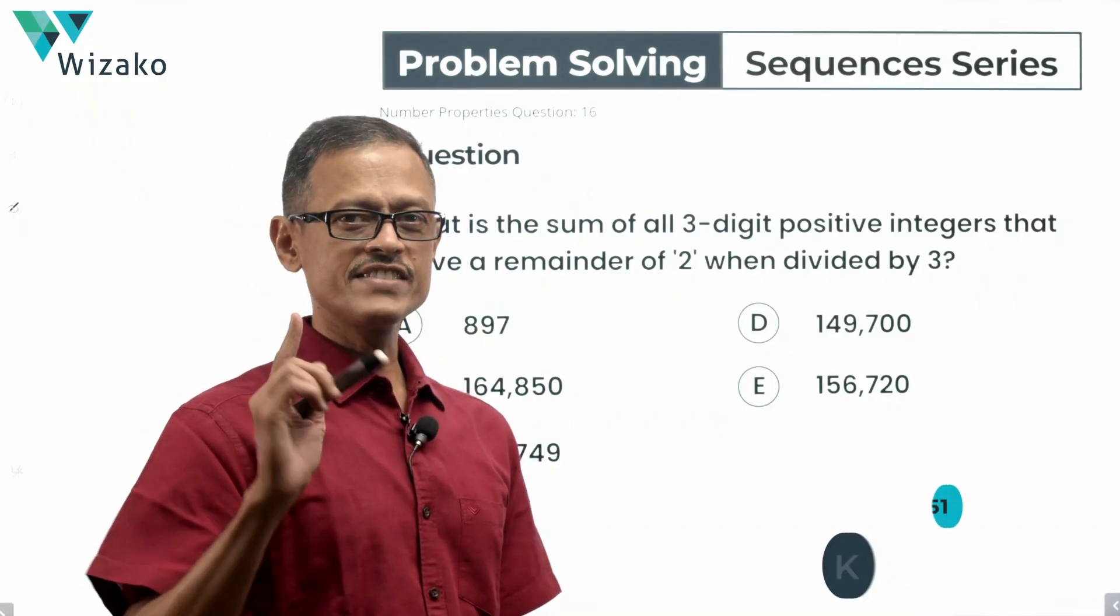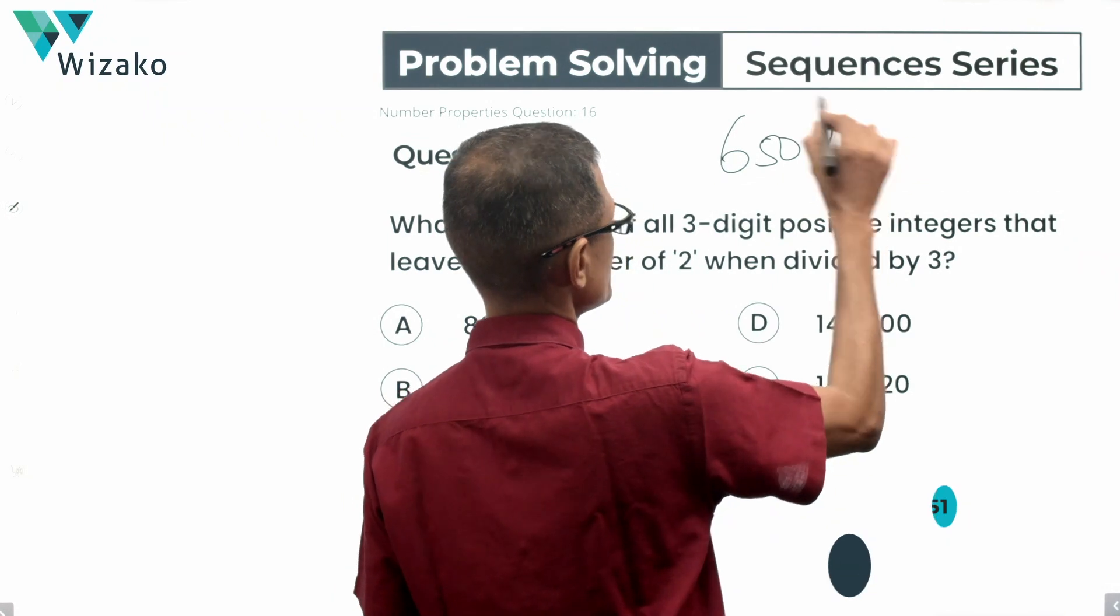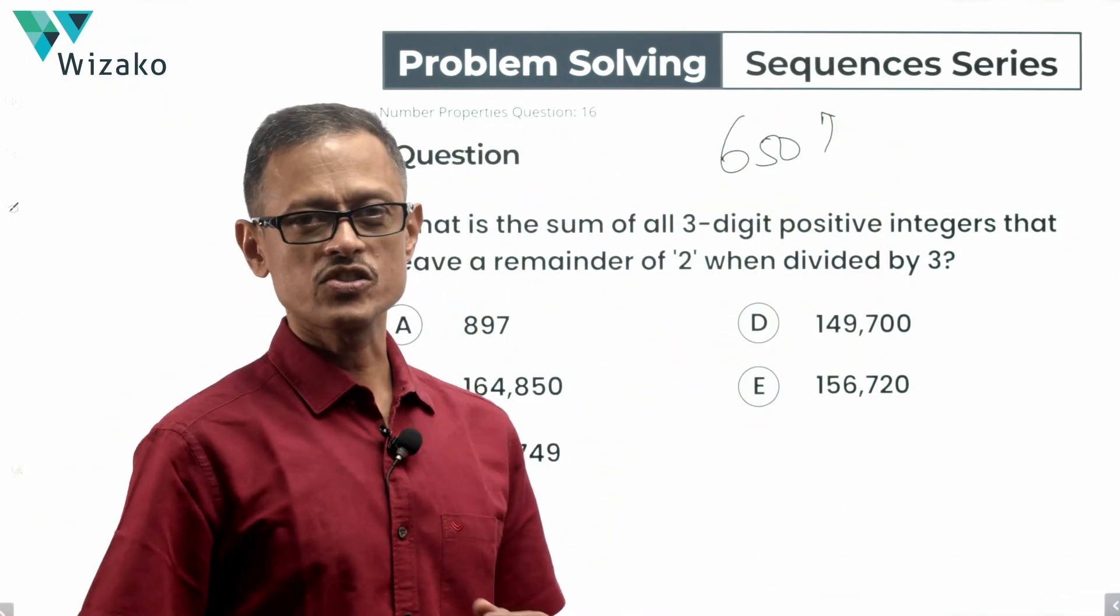Hi everyone, an interesting question, easy one conceptually. I will classify the question as a 650 level question because it involves quite a bit of calculation and working through a couple of stages to get to the answer.